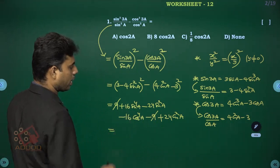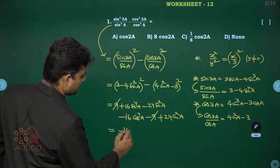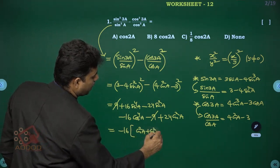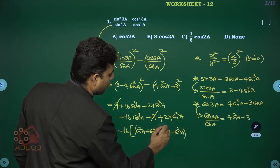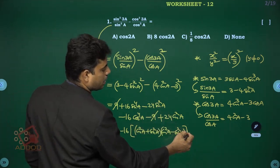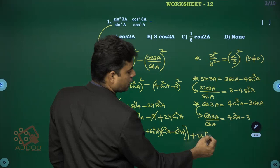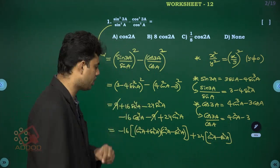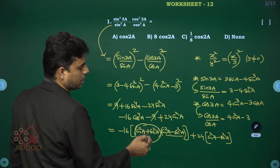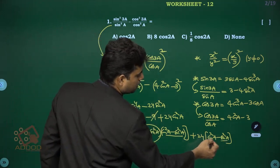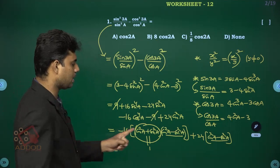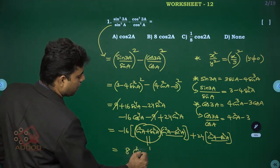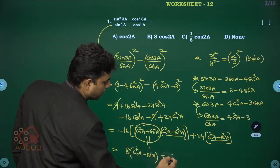The remaining terms give -16(cos⁴a - sin⁴a) + 24(cos²a - sin²a). Factoring cos⁴a - sin⁴a = (cos²a + sin²a)(cos²a - sin²a) = 1·cos 2a. So we get (-16 + 24)·cos 2a = 8·cos 2a.